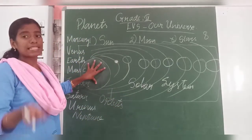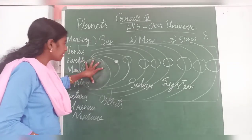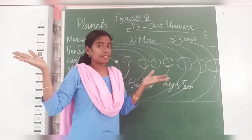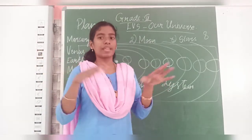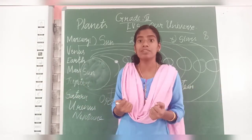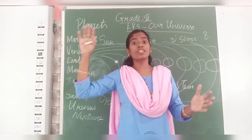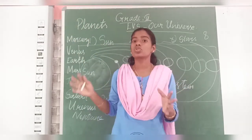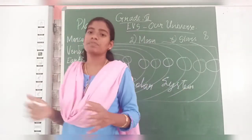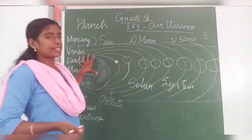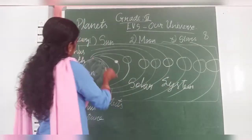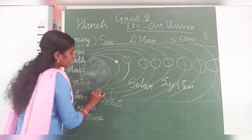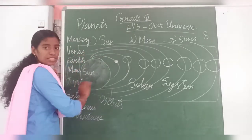Sun gives us light and heat. The sun is in the outer space — it is not in our atmosphere. We have air in the atmosphere. If the sun were there, it would be too hot for us to live. Even being in outer space, how much heat we are feeling! So the sun is in the outer space and in the center. The orbits go all around, on both sides.